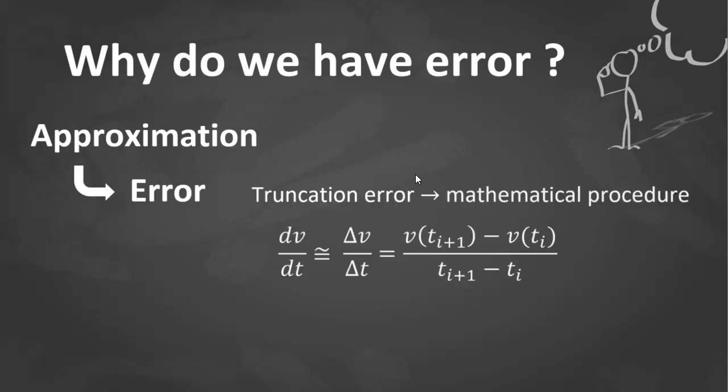When the error is the result of using approximations to represent exact mathematical procedures, we call it truncation error. An example is in the falling parachutist problem in our previous lecture videos, when we approximate the derivative of the parachutist's velocity by a finite divided difference equation.